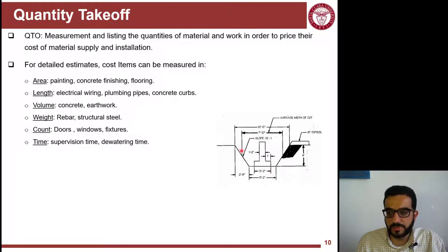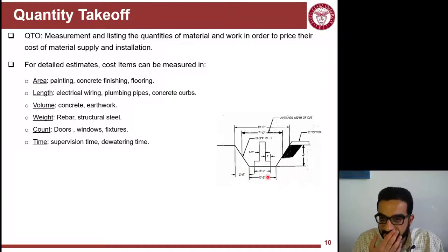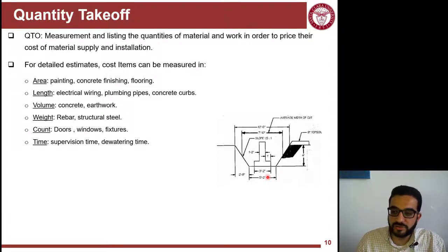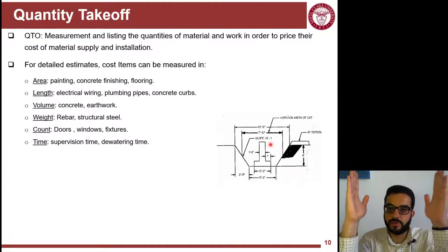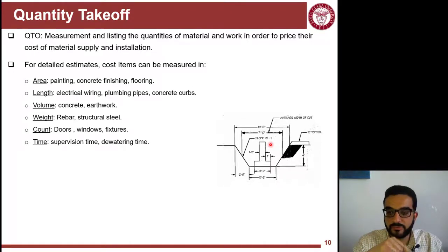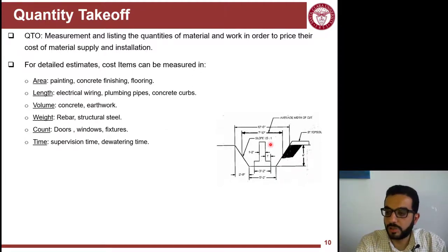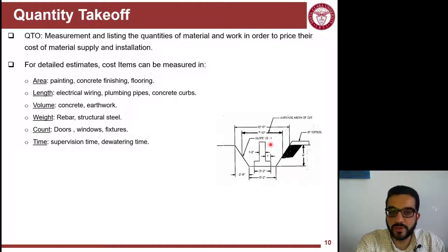As an example of quantity takeoff: for a footing, you need to do quantity takeoff of the excavation. You have to think about how it's actually built on site — you can't just trench straight down vertically because no soil stands up at 90 degrees. You need trench boxes if you do that and must account for that cost. Alternatively, you let the soil form its natural angle of repose, based on the technical properties of the soil. You can make assumptions if you don't know the soil type, but you have to account for it.